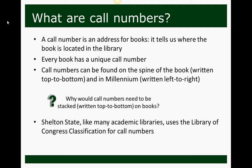When call numbers are on the spine of the book, they're written top to bottom. In Millennium, when you're doing a catalog search, they're written left to right. Sometimes call numbers can be relatively lengthy and the spines of books are not necessarily always that wide, so they stack them in order to let them all fit.